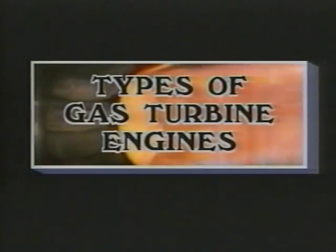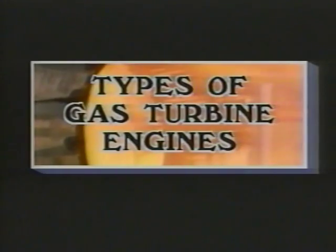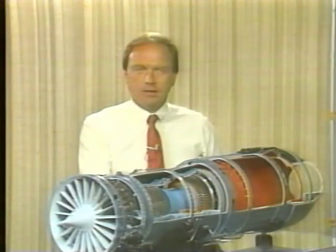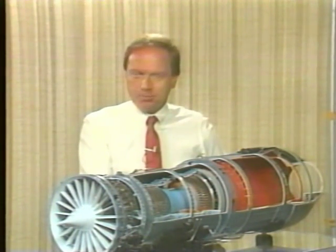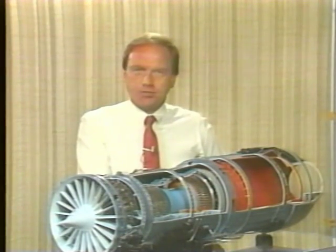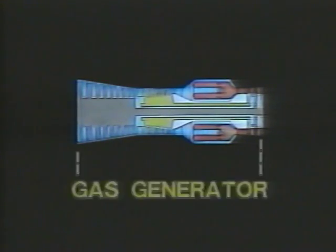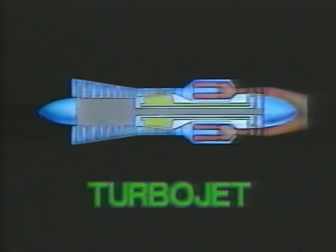Now that we understand the principles of our typical jet engine, we're ready to see how this gas turbine engine can be applied in different ways. The combined sections that really generate the power — the compressor, diffuser, burner, and turbine — are called the gas generator. The gas generator not only functions on its own, but it generates hot exhaust gases, energy in the form of heat and pressure that can be used in a variety of ways. The addition of a convergent exhaust duct turns it into a turbojet engine.